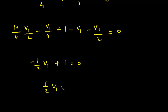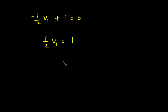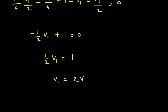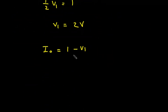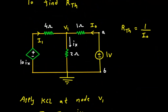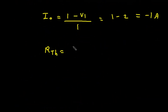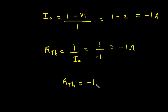From this, (1/2)·V1 equals 1, therefore V1 equals 2 volts. Now we find IO: IO equals (1 minus V1) divided by 1, so IO equals (1 minus 2) divided by 1, which gives IO equals minus 1 ampere. Therefore RTH equals 1 divided by IO equals 1 divided by minus 1, so RTH equals minus 1 Ohm.